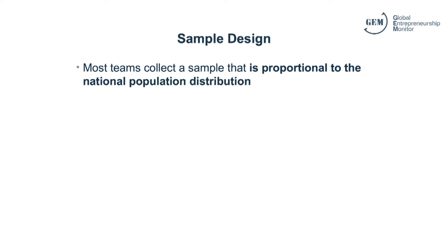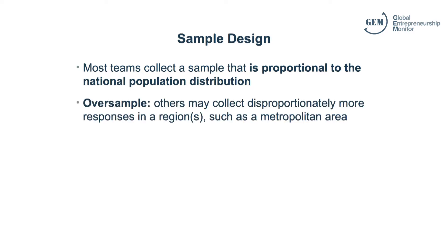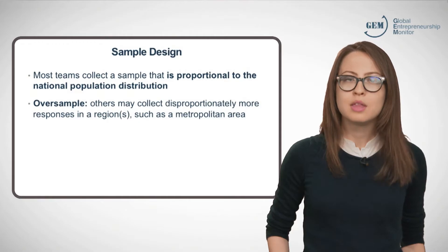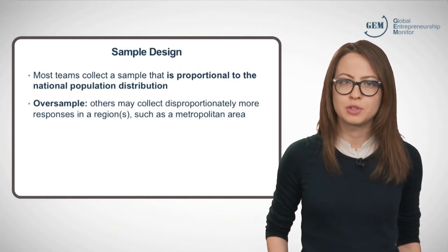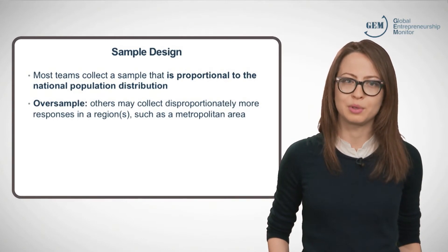Teams also have various sample design options. You can choose to collect a sample that is proportional to the national population, either to the age-gender breakdown in the country as a whole, or also in various predetermined strata. On the other hand, a team may choose to collect disproportionately more responses in one or more regions, such as a metropolitan area. This is often done if a team wishes to conduct more thorough analysis on that part of the APS sample.